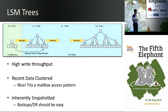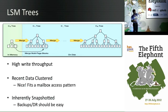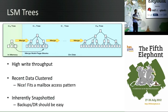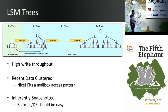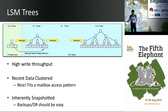This data structure is inherently snapshotted. The last tree on the rightmost side holds the entire data, and every day you can take the oldest tree and archive it — like a NetApp snapshot. So it's very easy to back up.